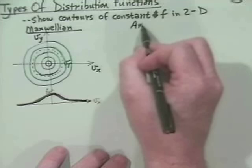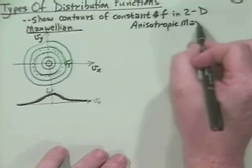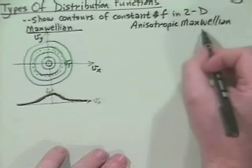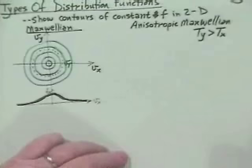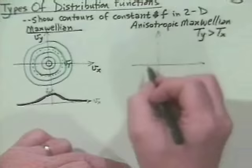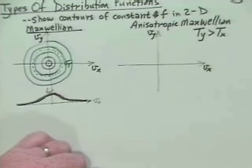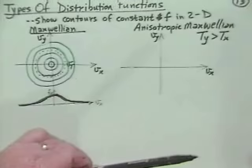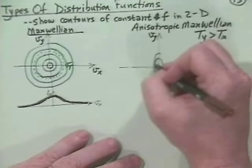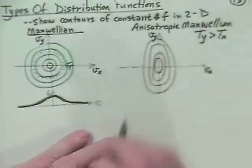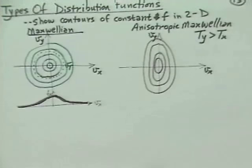Another case is the anisotropic Maxwellian, where the temperature in the y direction is greater than the temperature in the x direction but each direction is individually Maxwellian. The contours of constant f are ellipses — more spread in the vy direction due to higher temperature. We can define a thermal velocity in the x direction and a separate thermal velocity in the y direction.